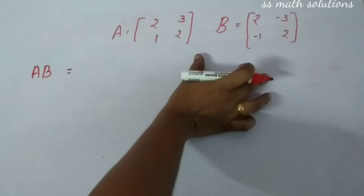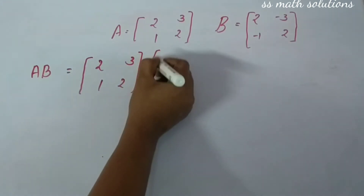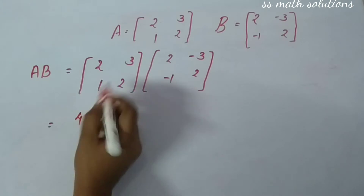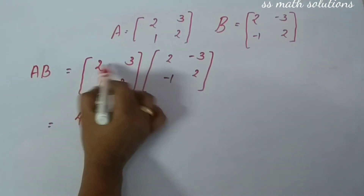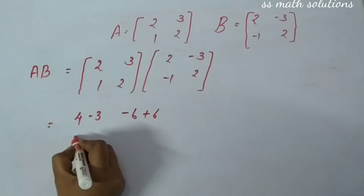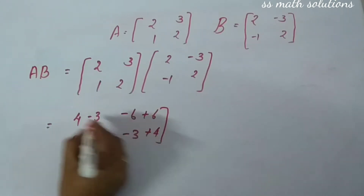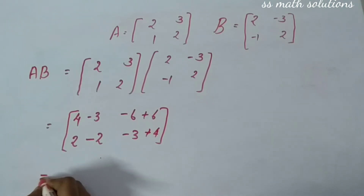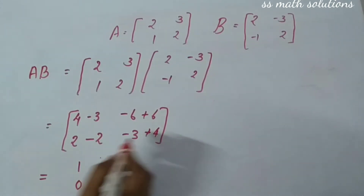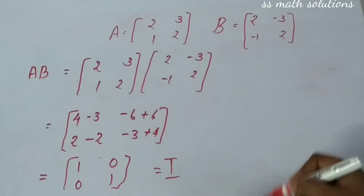Computing A into B: first row into first column gives 2×2=4 and 3×(−1)=−3. First row into second column gives 2×(−3)=−6 and 3×2=6. Second row into first column gives 1×2=2 and 2×(−1)=−2. Second row into second column gives 1×(−3)=−3 and 2×2=4. So the result is [4−3, −6+6; 2−2, −3+4] = [1, 0; 0, 1], which is the identity matrix. So we got AB = I.